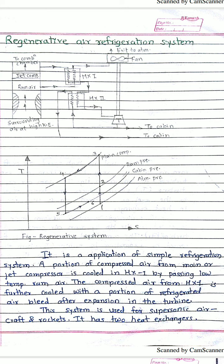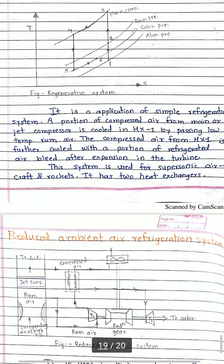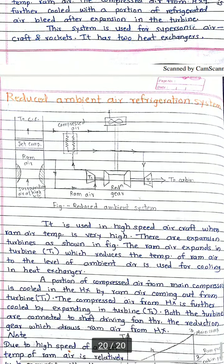This regenerative system is generally used in supersonic aircraft — where speeds are very high — and in aerospace applications such as rockets, where cooling and air conditioning are required. Two heat exchangers are a key feature of this system. Next, we will discuss the last method: the reduced ambient air refrigeration system.